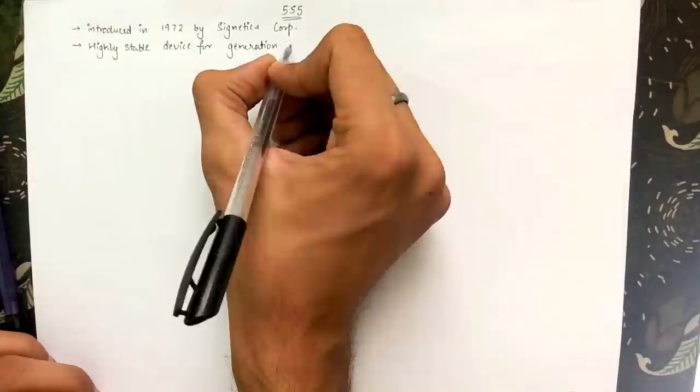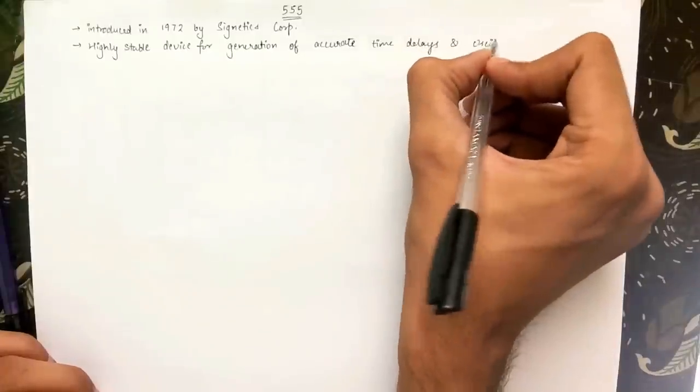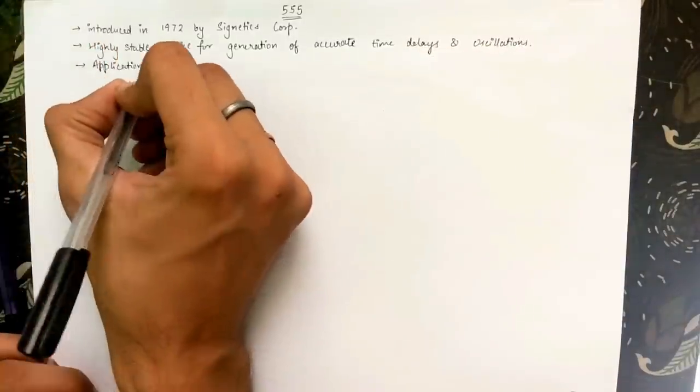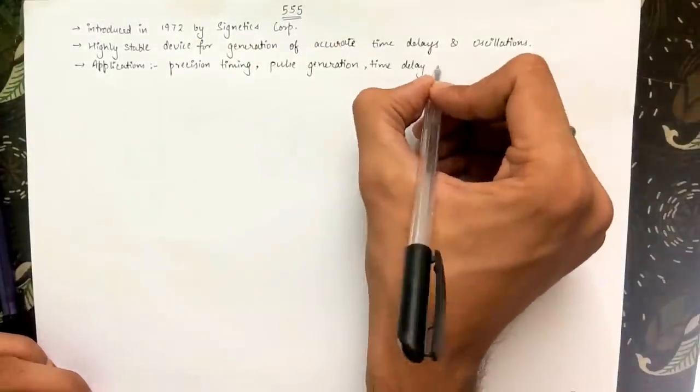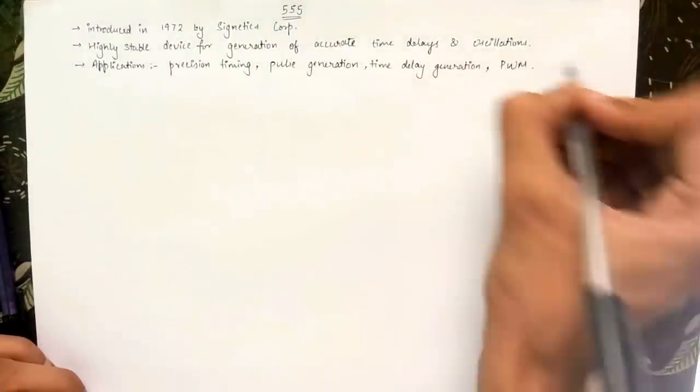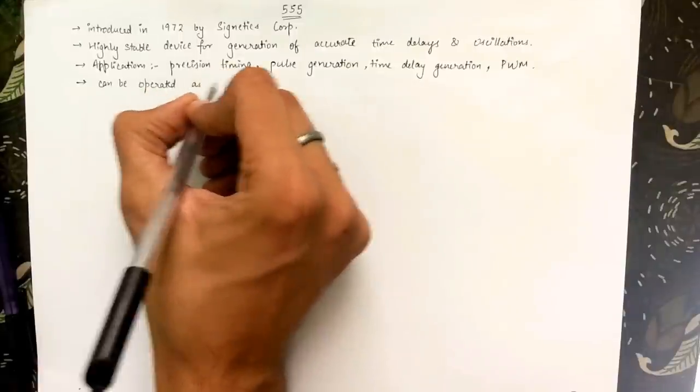It is usually described as a highly stable device for generation of accurate time delays and oscillations. Some of its major applications include precision timing, pulse generation, time delay generation and pulse width modulation. It can be operated in one out of two modes: monostable or astable.